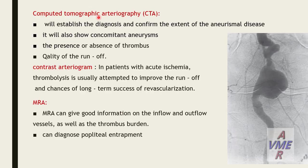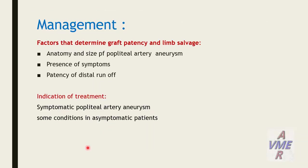CT angiography will establish the diagnosis and confirm the extent of aneurysmal disease. It will also show concomitant aneurysm in the femoral aorta, presence or absence of thrombus, and quality of runoff. Contrast arteriography in patients with acute ischemic thrombosis is usually attempted to improve runoff and the chance of long-term success of revascularization. MRA can give good information on inflow-outflow vessels as well as thrombus burden, and can diagnose popliteal entrapment.